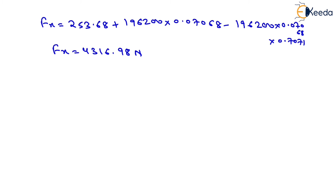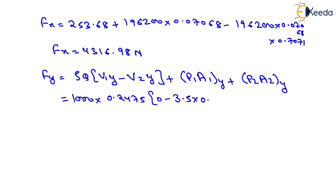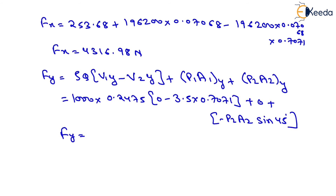Resolving forces along the y-axis: Fy = ρq(v1y − v2y) + p1A1y + p2A2y. Substituting ρ = 1000, q = 0.2475, v1y = 0, v2y = 3.5 × 0.7071, p1A1y = 0, and p2A2y = −p2A2 sin45°, we get Fy = −10,420.44 N.